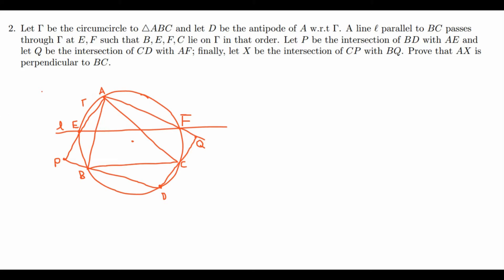Okay, so I'll draw this in a slightly different color because it's important. CP with BQ like this. And this is X. And we want to prove that AX is perpendicular to BC. So this line is perpendicular to BC is what we want to prove.